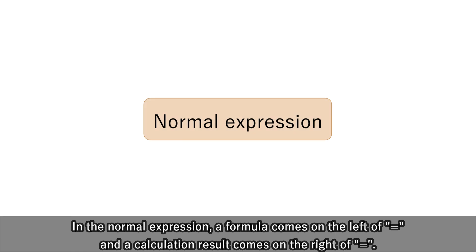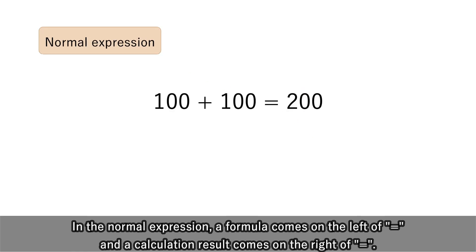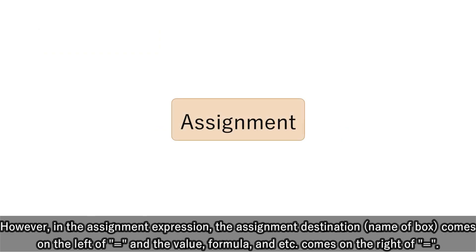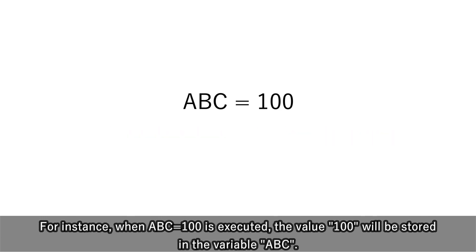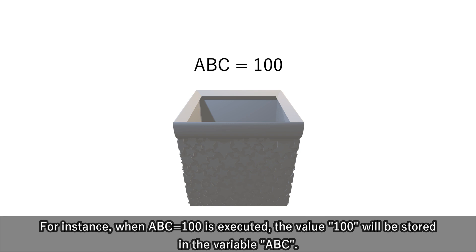In the normal expression, a formula comes on the left of equals and a calculation result comes on the right of equals. However, in the assignment expression, the assignment destination comes on the left of equals and the value, formula, etc. comes on the right of equals. For instance, when ABC equals 100 is executed, the value 100 will be stored in the variable ABC.